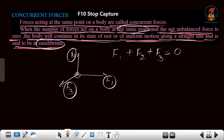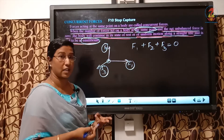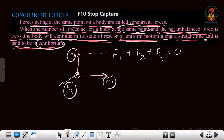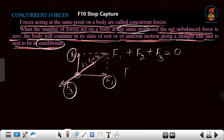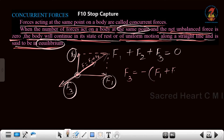If you look into this diagram, F2 and F1 can be considered as two sides of a parallelogram. Then the resultant according to the parallelogram law will be the diagonal, which is equal to F = F1 plus F2. F3 is acting downwards whereas F = F1 plus F2 is acting vertically in the opposite direction. So we can write F3 is equal to minus of (F1 plus F2).